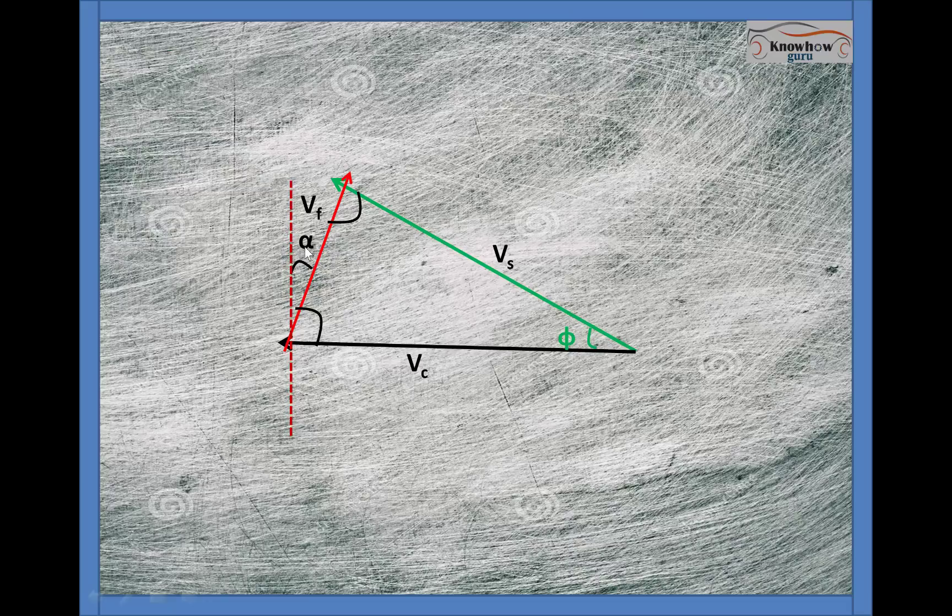That means it's making an angle of alpha, that is why this angle then from that knowledge we can find out what angle is this. You know this alpha and this makes a 90 degree angle that means it will be 90 minus alpha.